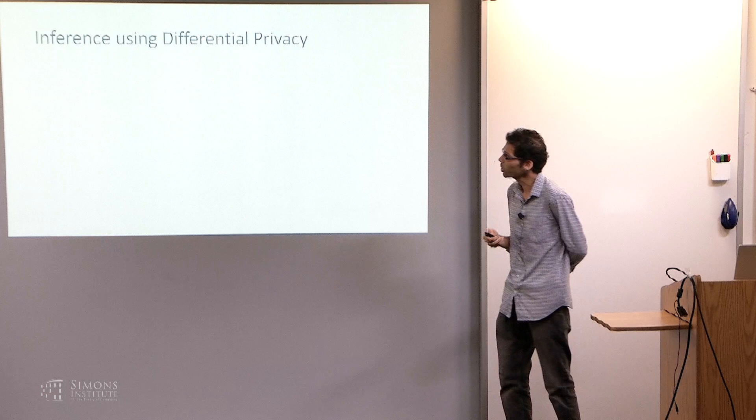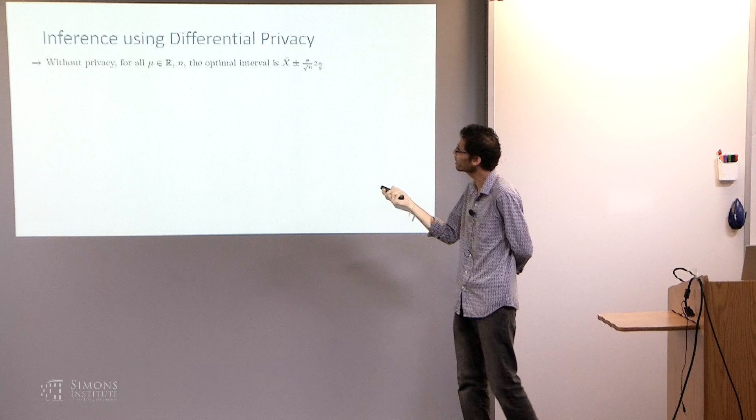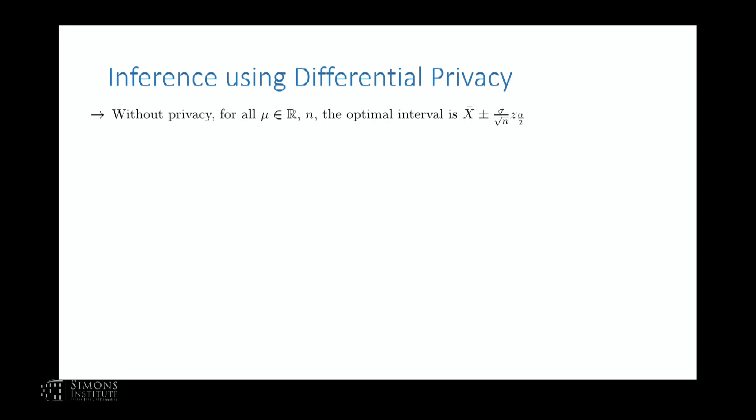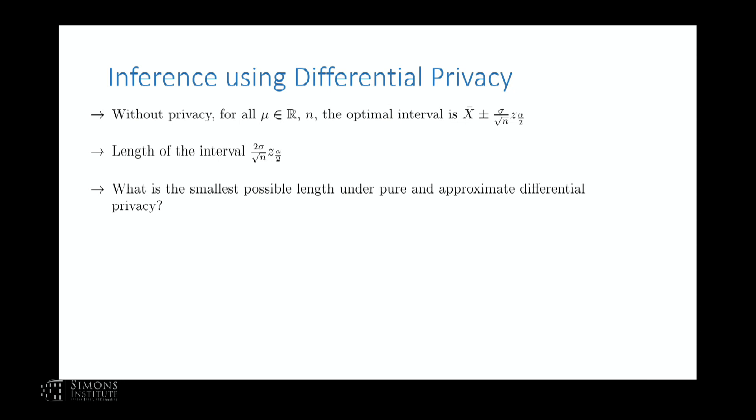Let's see what happens without privacy. Without privacy, for all mu and for all n, the optimal interval is x-bar plus or minus sigma divided by root-n times z_{alpha/2}. This is STAT 101. The length of this interval is 2*sigma / (root-n * z_{alpha/2}). I'm keeping all the constants because we care about them in this talk. This will be our baseline — we will try to construct differentially private confidence intervals with length as close to this as possible, and we cannot get anything smaller.